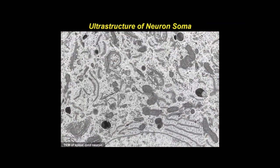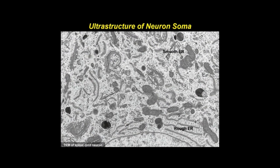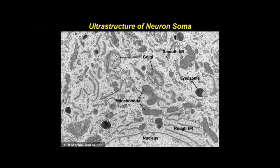At higher magnification, the soma contains a wide variety of organelles, including multilayered rough and smooth ER, mitochondria, multiple Golgi complexes, and lysosomes. A portion of the large euchromatic nucleus is seen at the bottom.